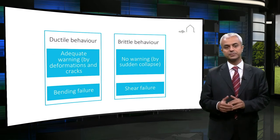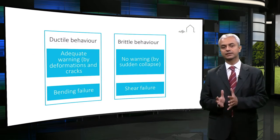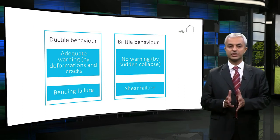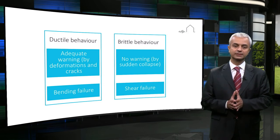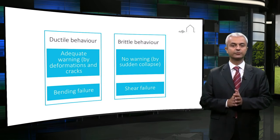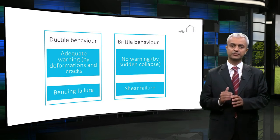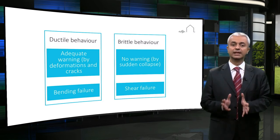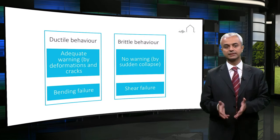Ductile failure must be contrasted with brittle failure, which is accompanied by almost complete loss of resistance, generally complete disintegration, and the absence of adequate warning before failure. Brittle failure generally results in sudden collapse, and this failure mode is shear rather than bending.